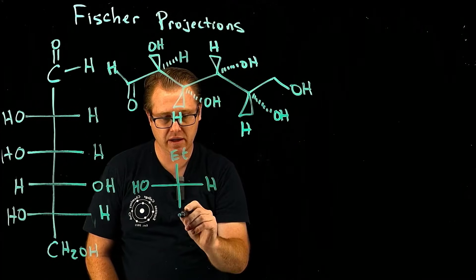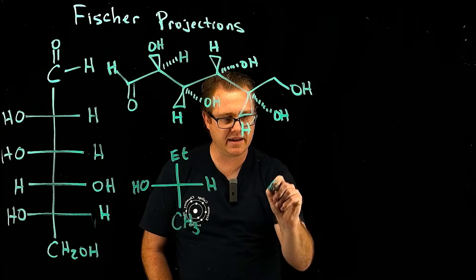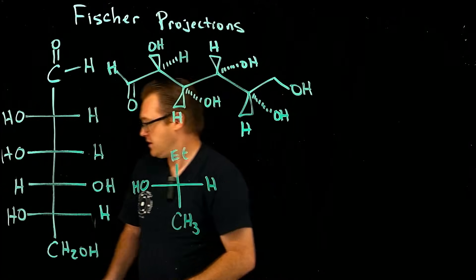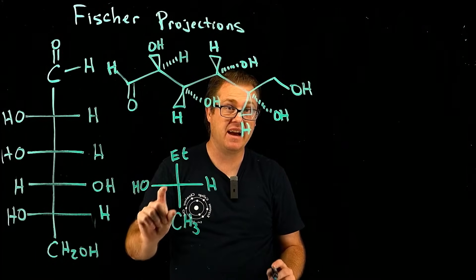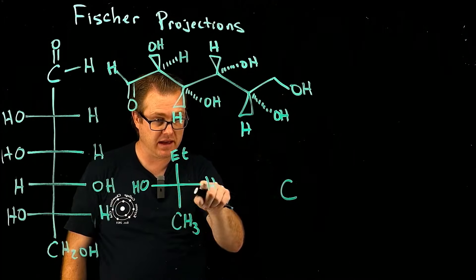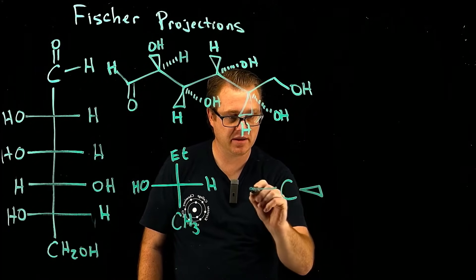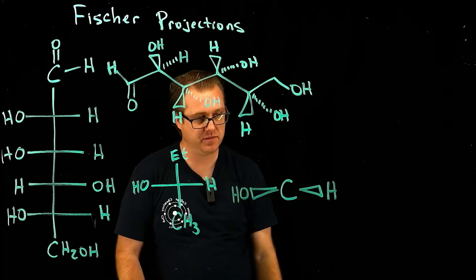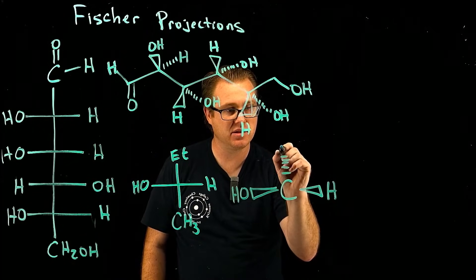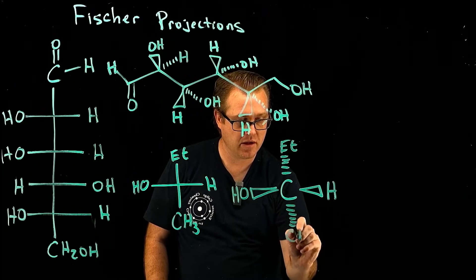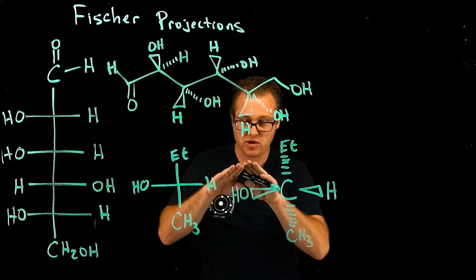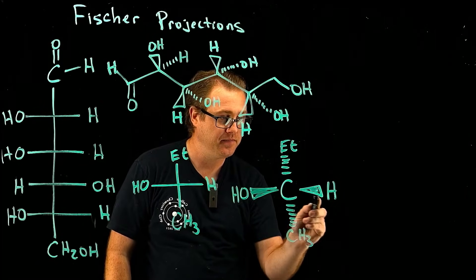In the Fisher projection, we have a central carbon with an ethyl group, a hydrogen, and a CH3 group. The key rule is that the horizontal lines represent wedges — bonds coming out toward you — while the vertical lines represent dashes — bonds going back away from you.